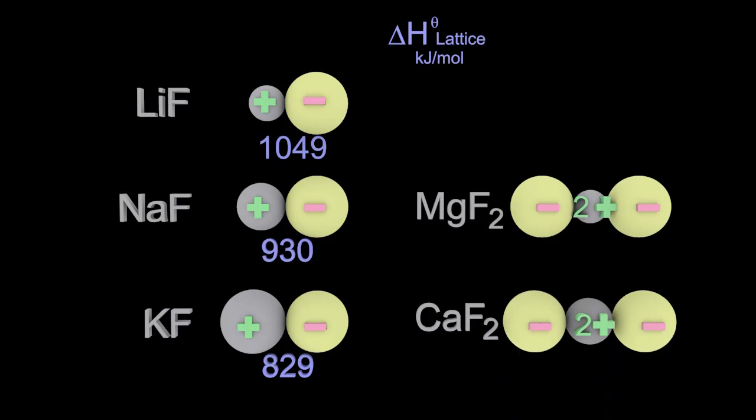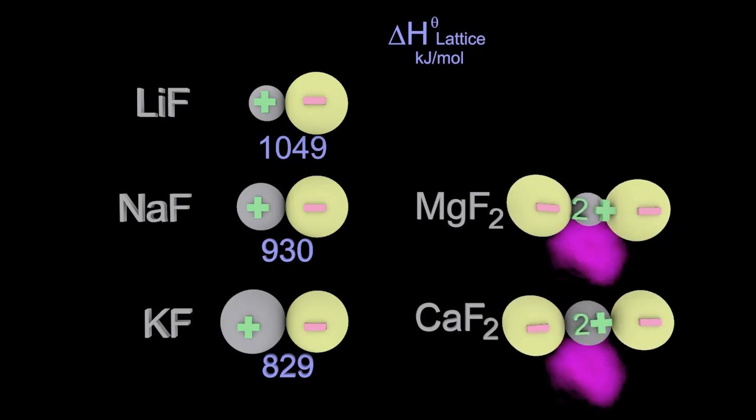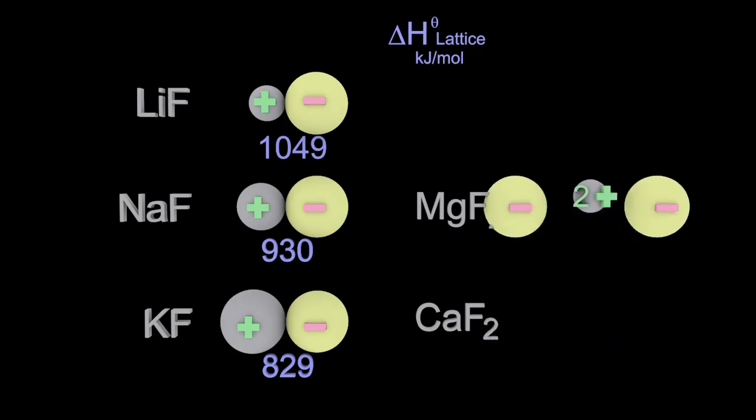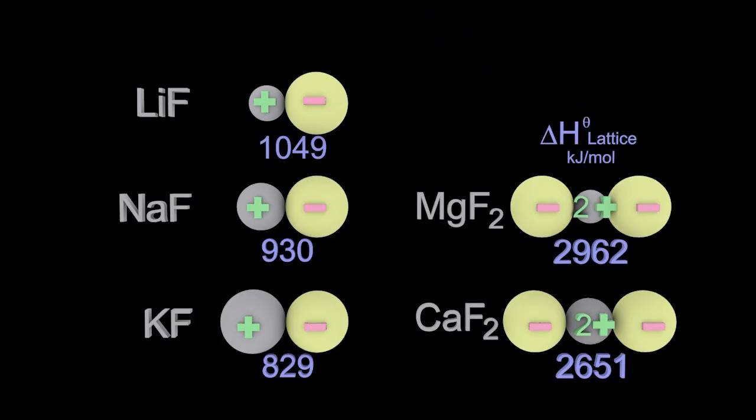What about magnesium and calcium fluoride? Well, we would expect those to have a higher lattice energy. After all, they have a plus 2 charge on that ion. And that's going to give an increased charge density, more attractiveness to those fluoride ions. And just as a point of reference, don't worry about the fact there are two fluoride ions, whereas before there was only one. That doesn't play any part in this.